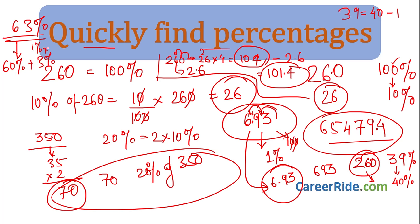Let us verify: 10% of 200 is 20 marks for A. A fails by 30, so passing marks = 20 + 30 = 50. For B: 40% of 200 is 80 marks. B gets 30 more than minimum, so 80 minus 30 = 50, which is the same passing mark. The logic was that we equated passing marks — A got 30 less than passing marks so we added, and B got 30 more so we subtracted, and equated them.